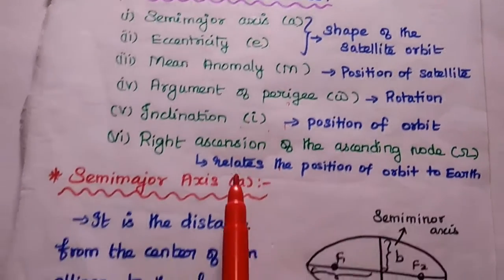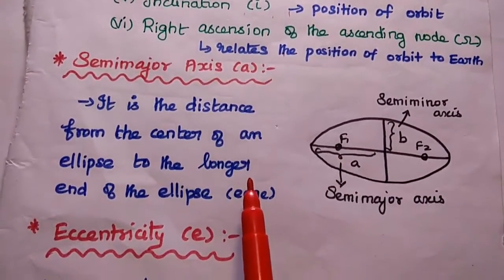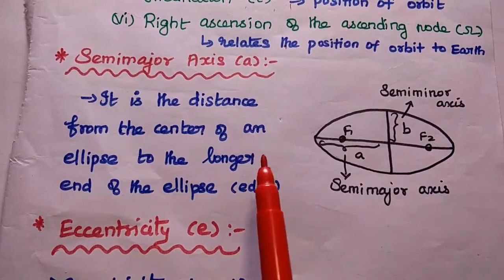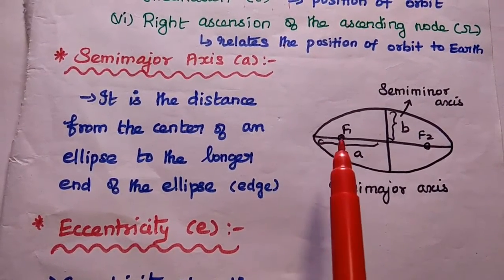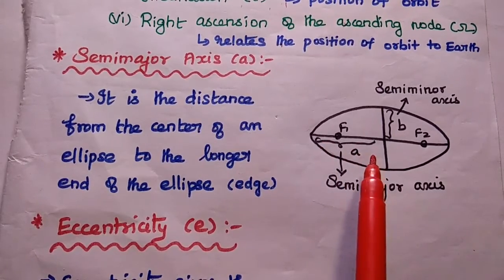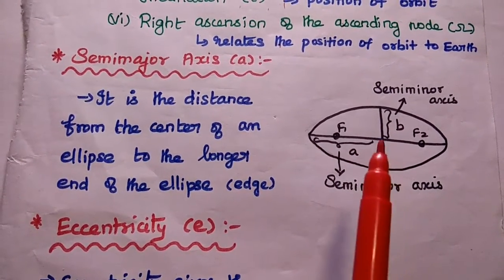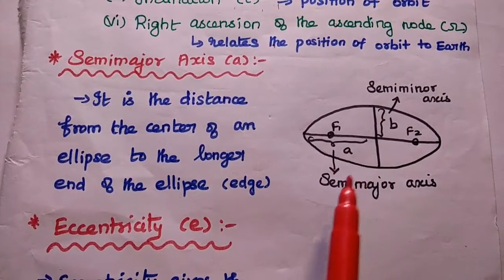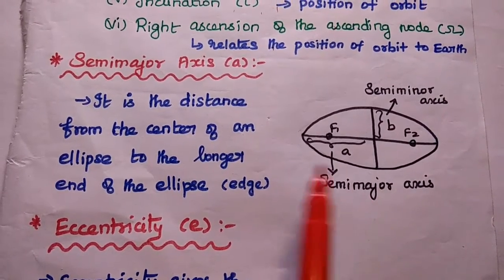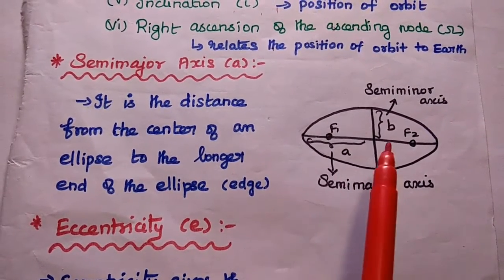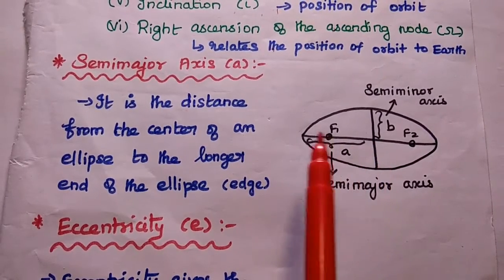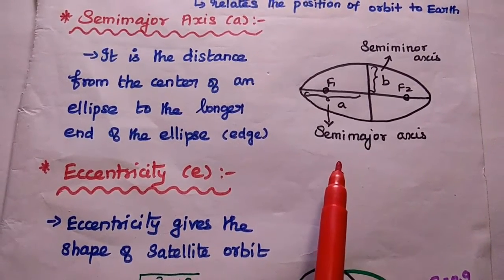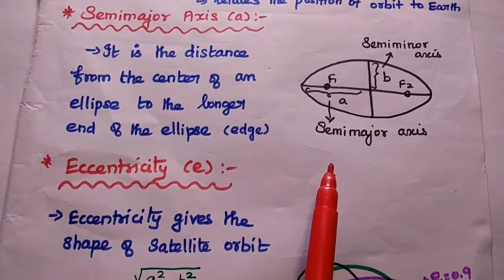Let's discuss each type in detail. The first one is semi-major axis. In general, the path of the satellite is an elliptical path. The horizontal line represents the major axis and the vertical line represents the minor axis. The half of the major axis is known as the semi-major axis — it is the distance from the center of an ellipse to the edge of the ellipse. It defines the shape of the satellite orbit.